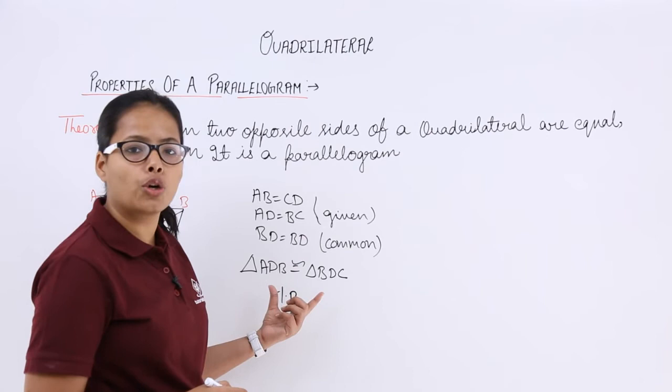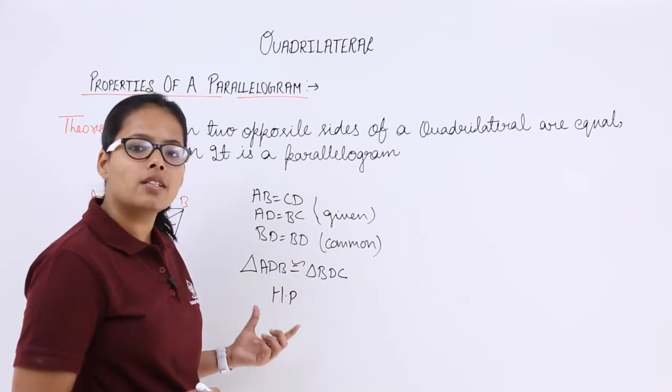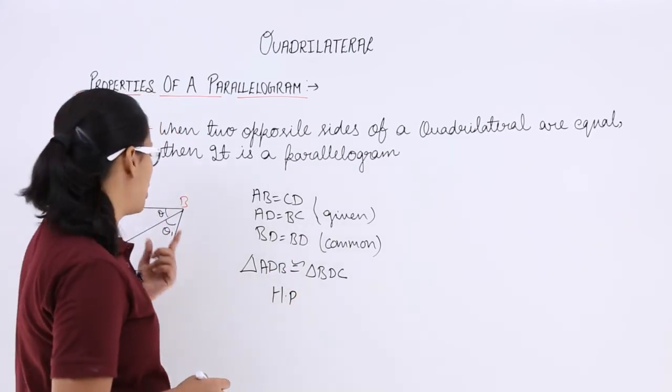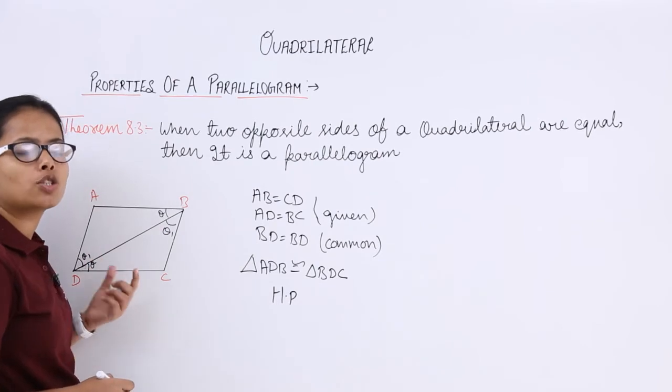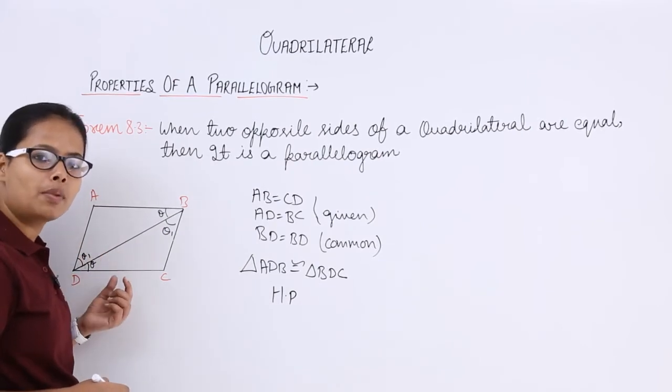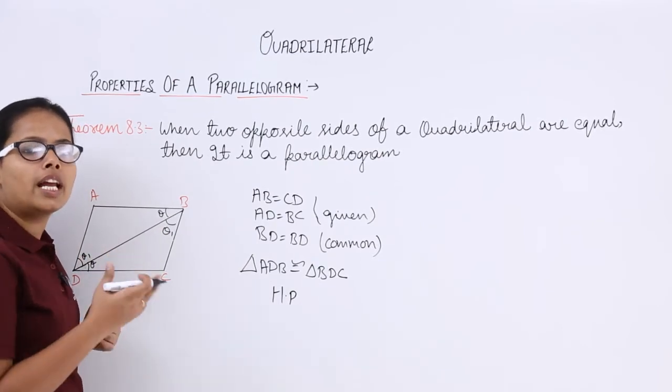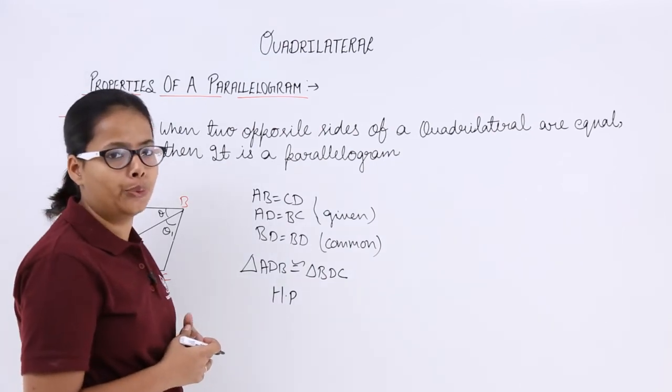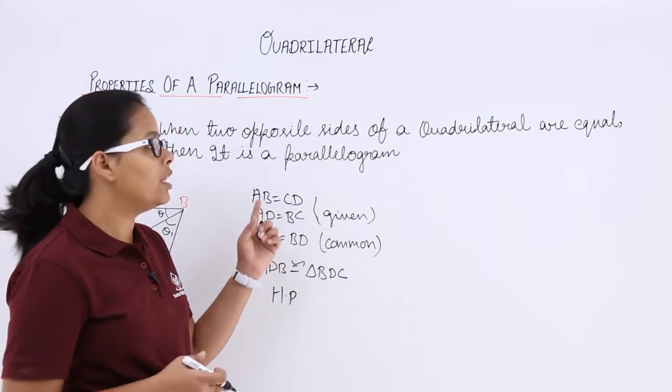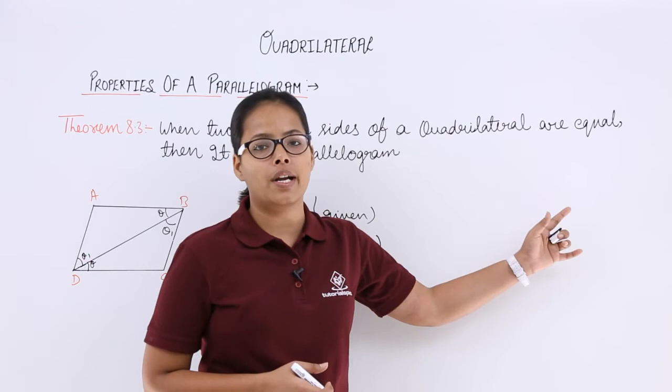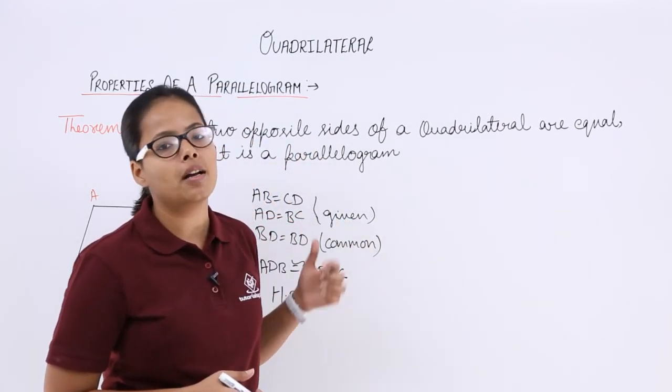As these two triangles are congruent to each other, their angles should be similar or their opposite angles should be similar so that their opposite sides become similar as I have proved in theorem 8.2. So, that's how if opposite sides of a quadrilateral are equal, this will make it a parallelogram.